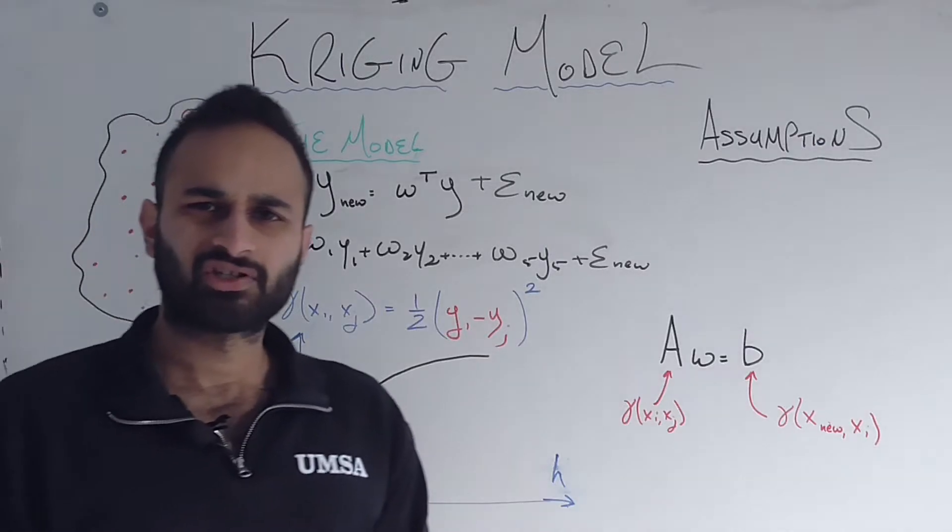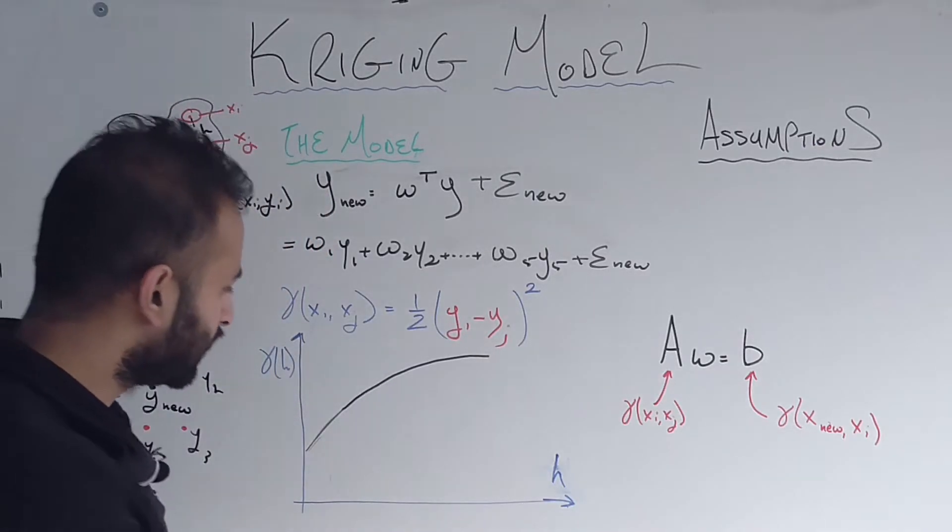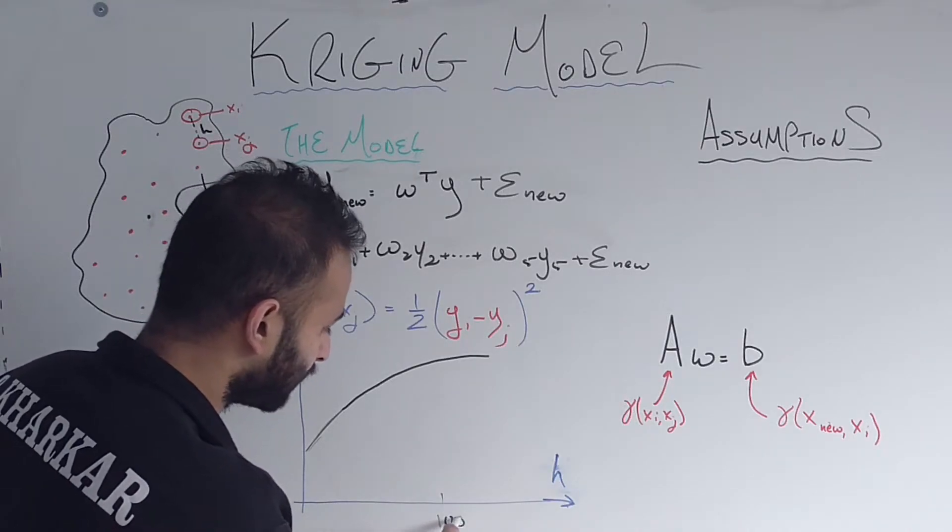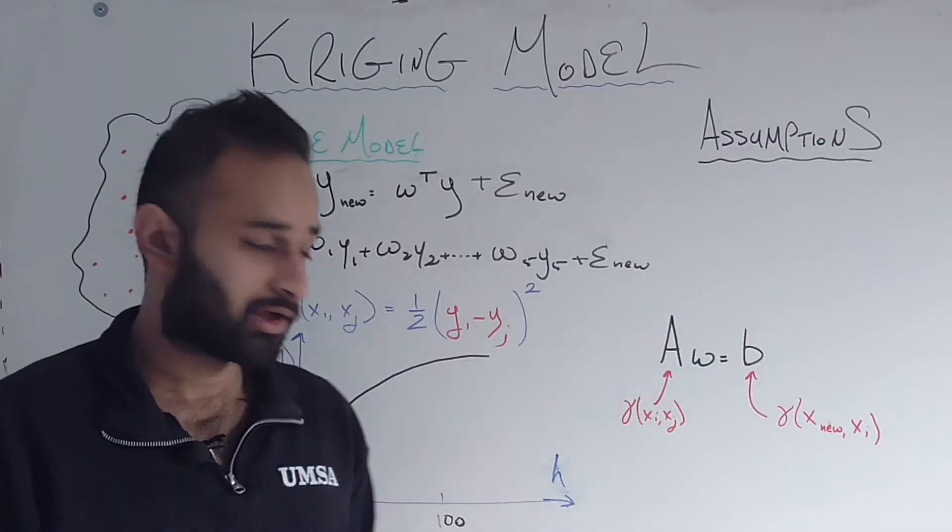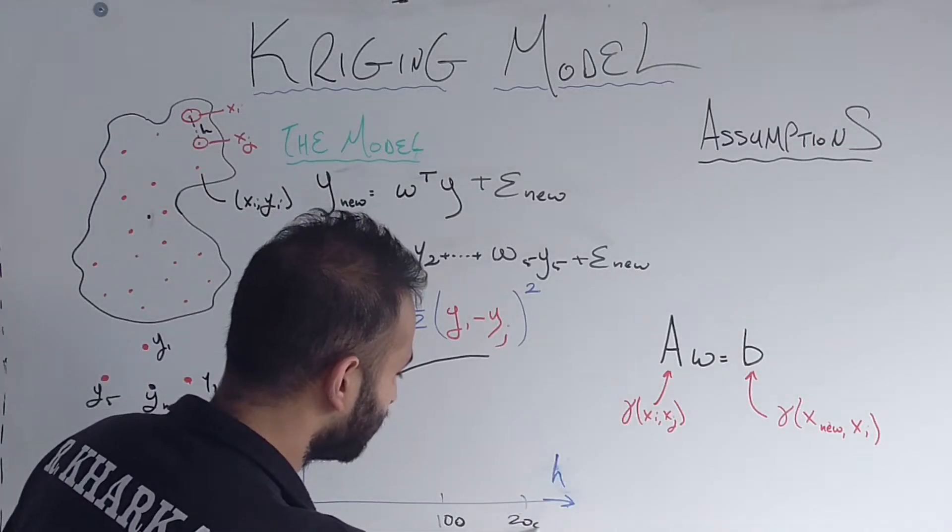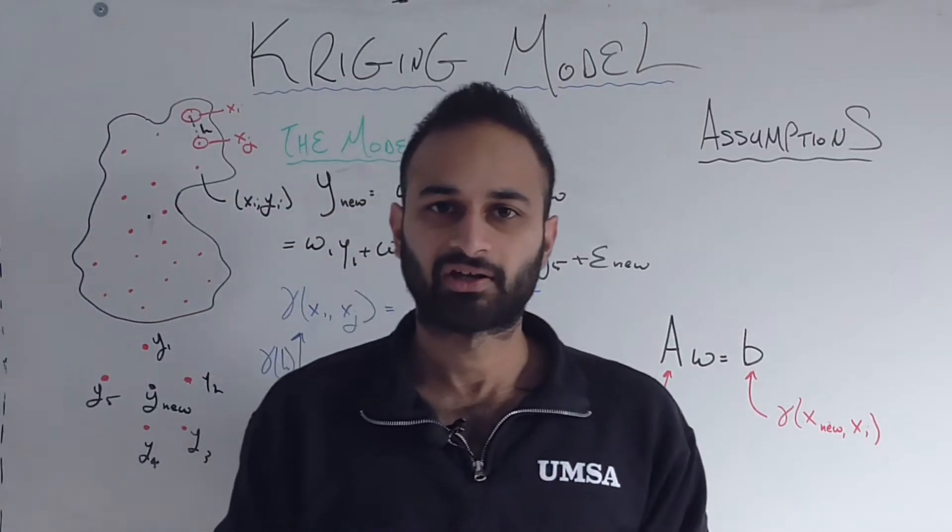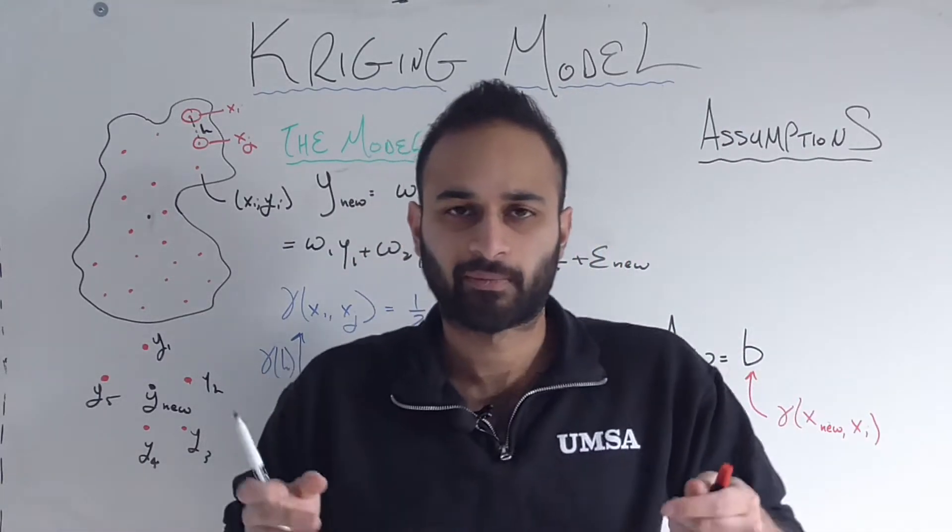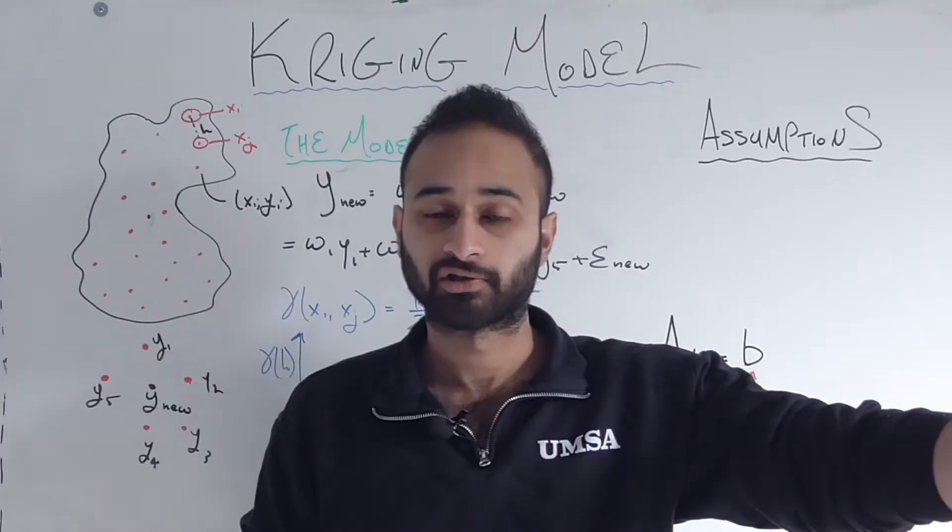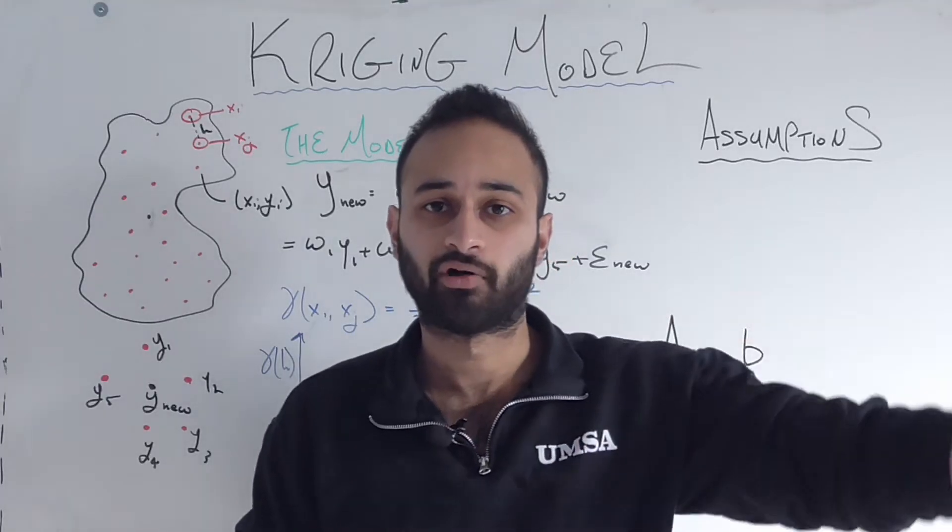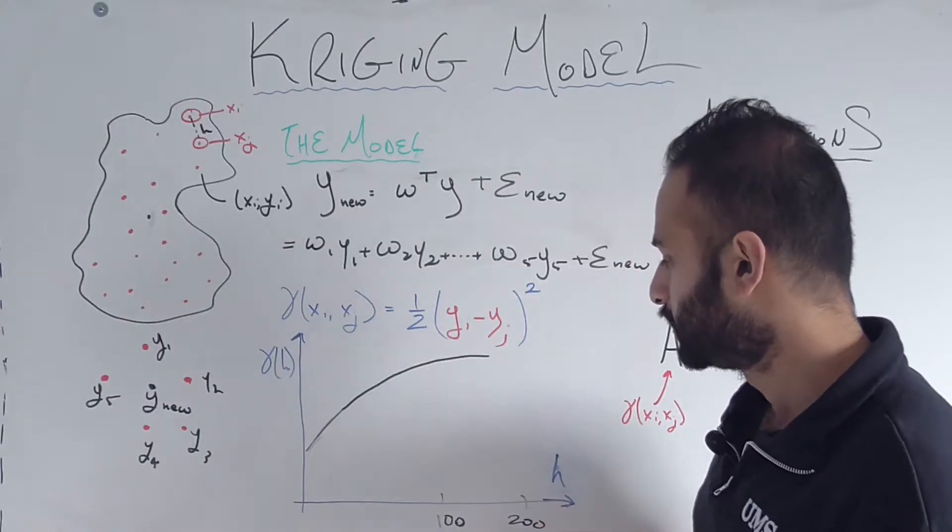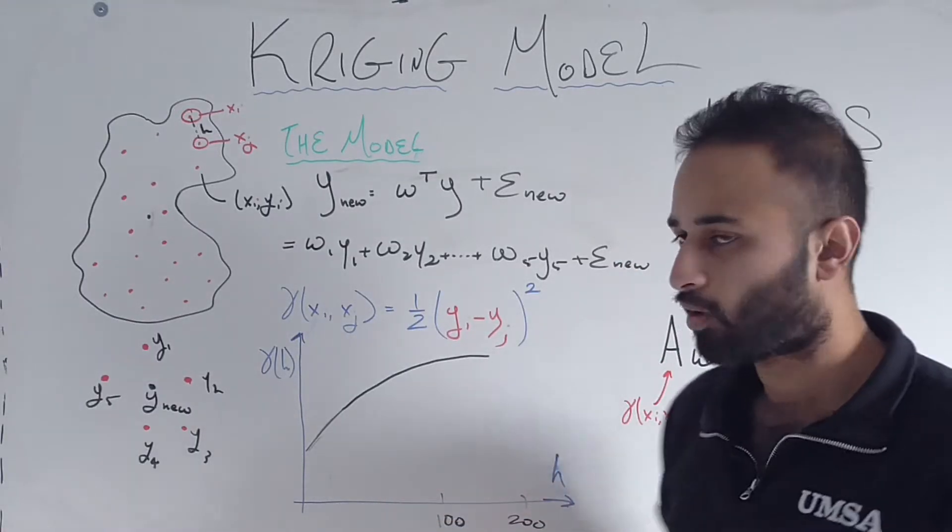Why do we expect it to plateau off at some point? Well, here's the story. Whether you are, let's say a hundred miles away, whether your two points are 100 miles away or whether they're 200 miles away, you're not expecting your gamma to change by all that much. Because basically you're saying if I'm here and I go walk 100 miles versus if I'm here and I walk 200 miles, I'm not expecting this function to be all that different. So that's why we're expecting this guy to plateau off.